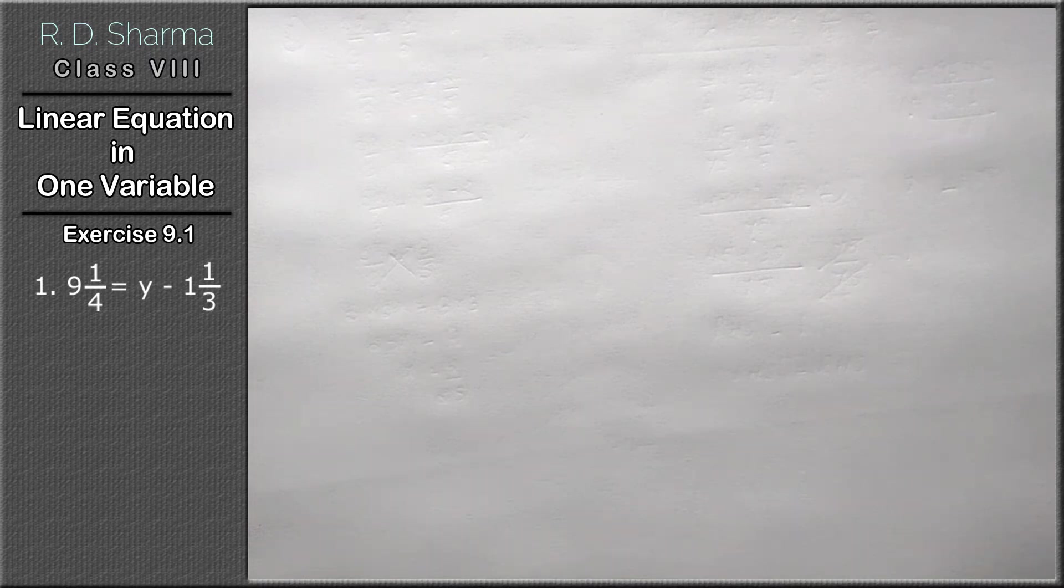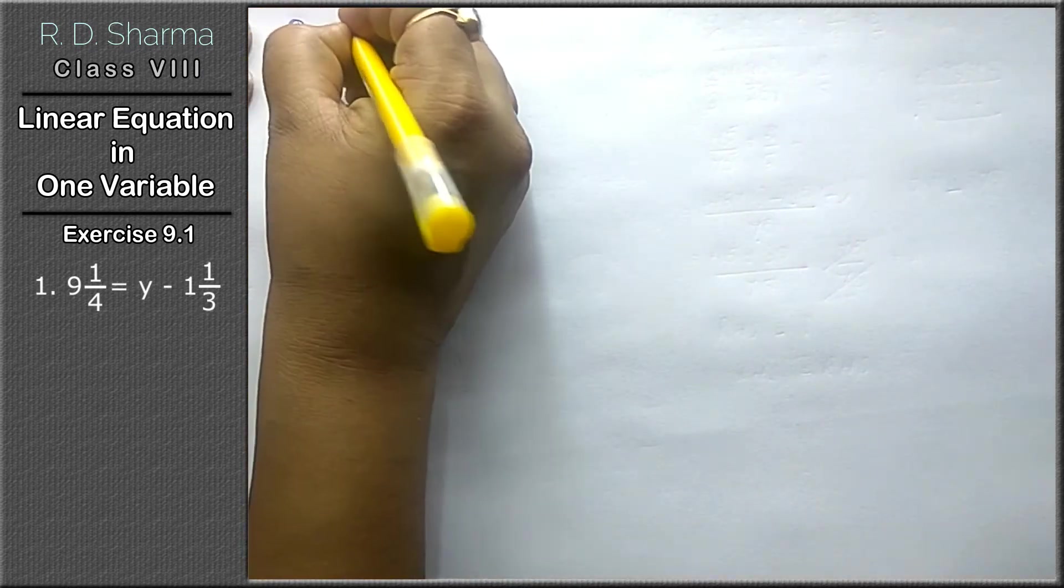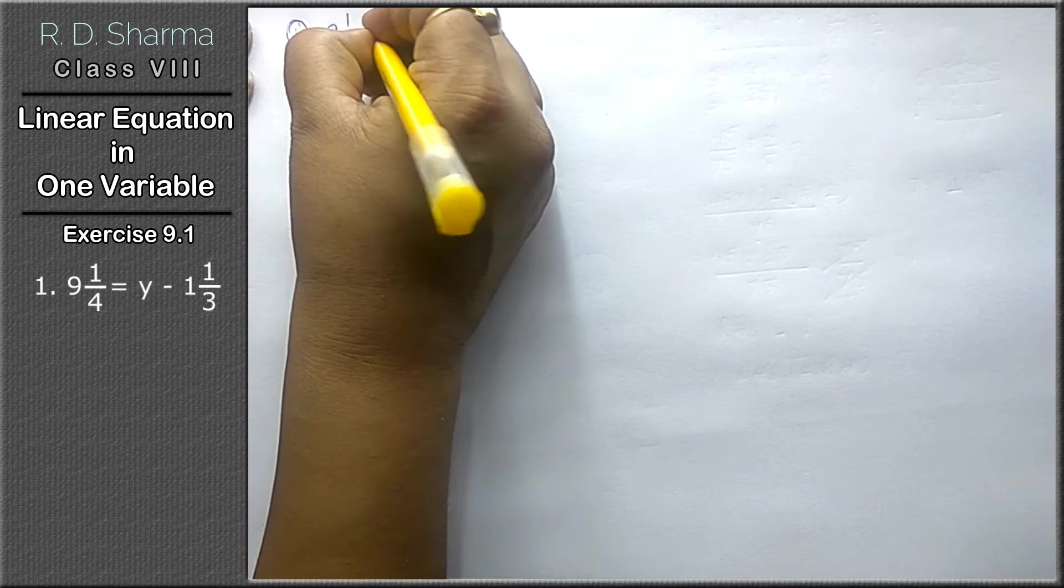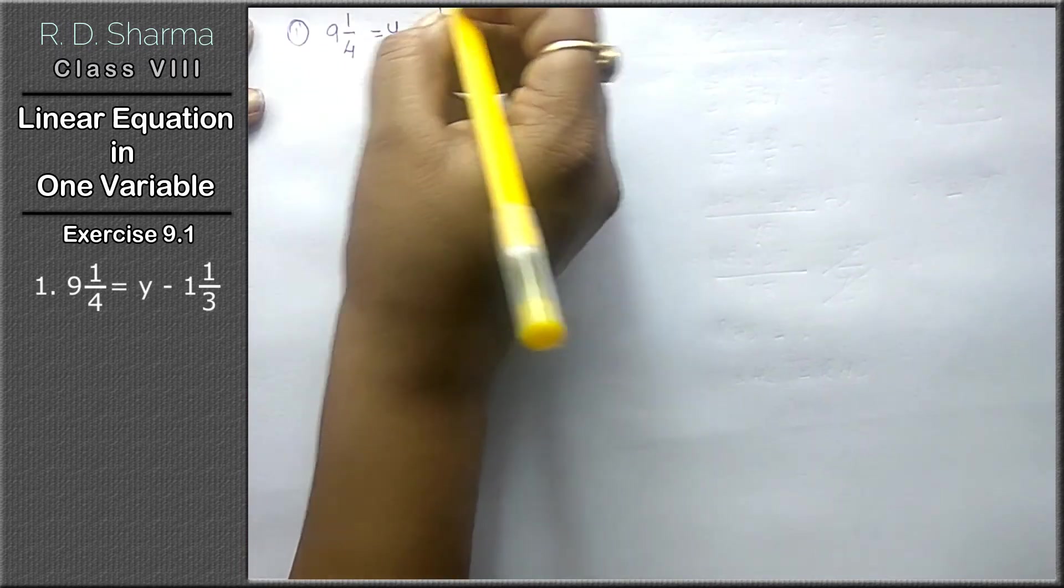Hello friends, welcome to Learn Maths. Today we will do linear equation in one variable, question number 1. The question is 9 whole 1 upon 4 equals to y minus 1 whole 1 upon 3.